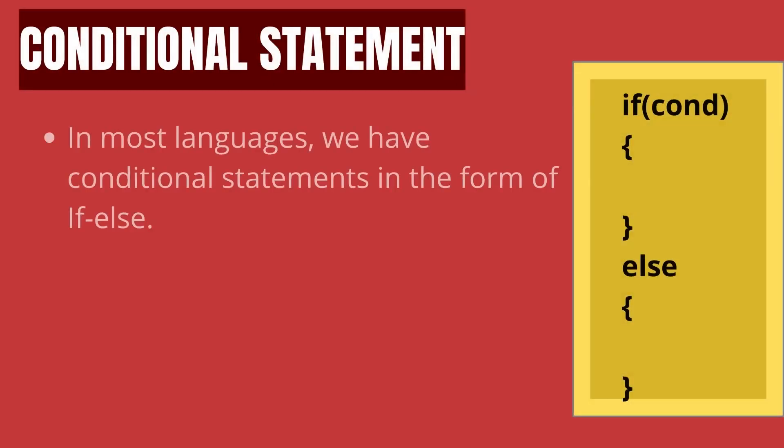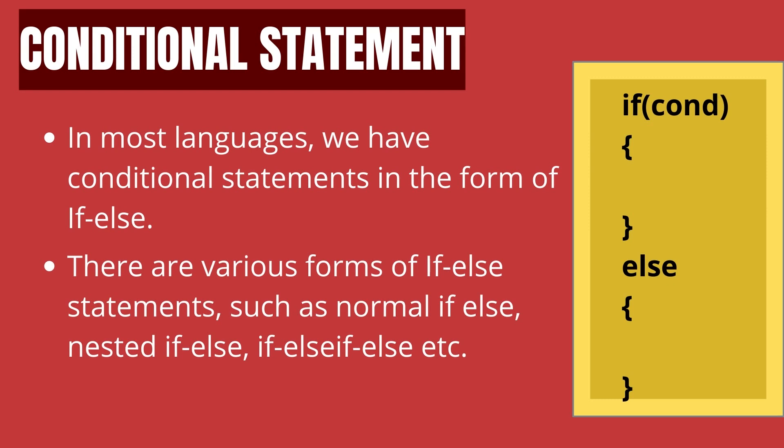Next, we have conditional statements. This is in the form of if-else statement. If-else statements are part of this because here also we specify the code inside a structured block. Along with simple if-else, we can have a nested level if-else statement as well. In the diagram shown to the right, we have a very basic structure for if-else code. The code will run in only one direction.